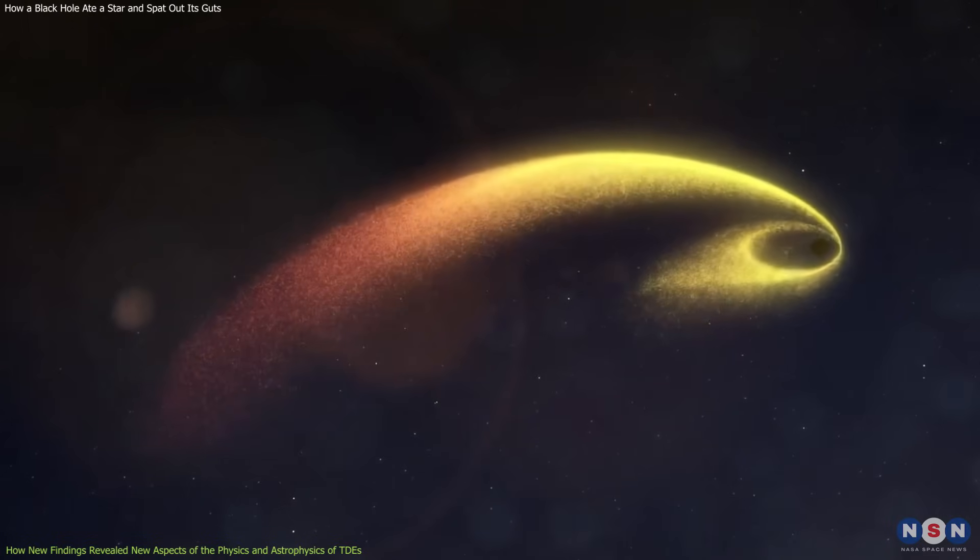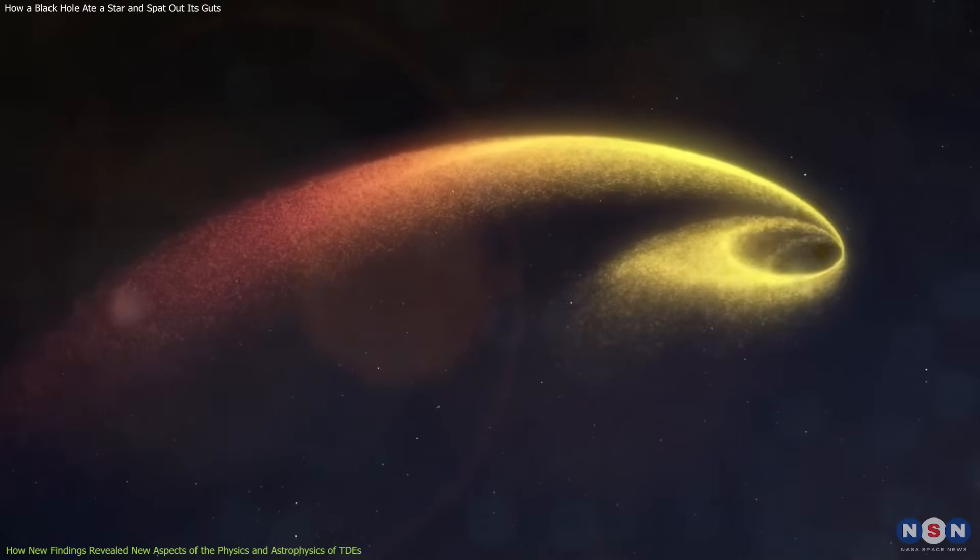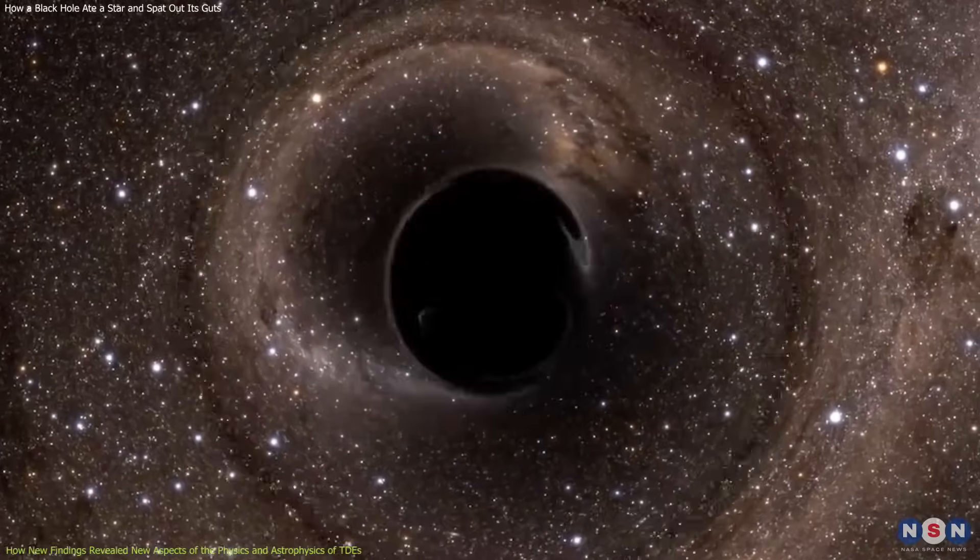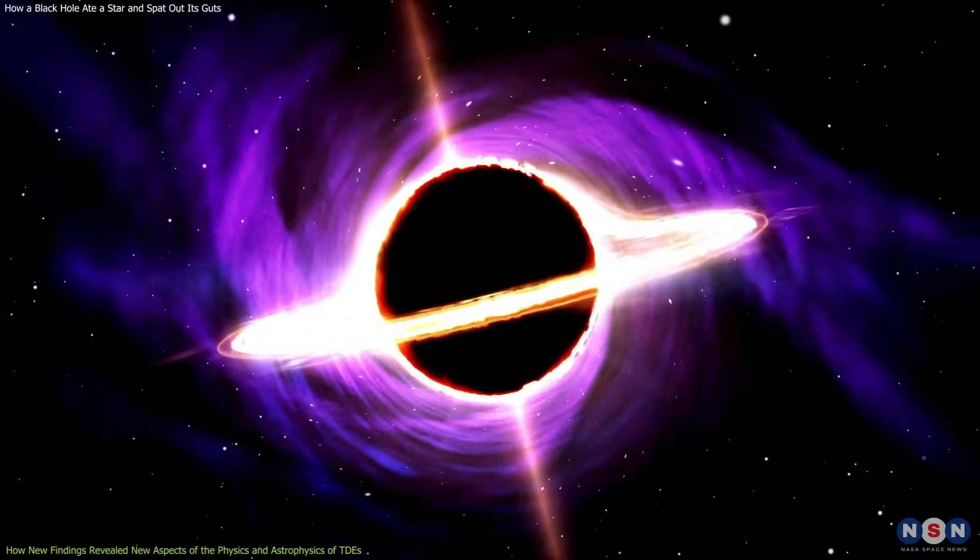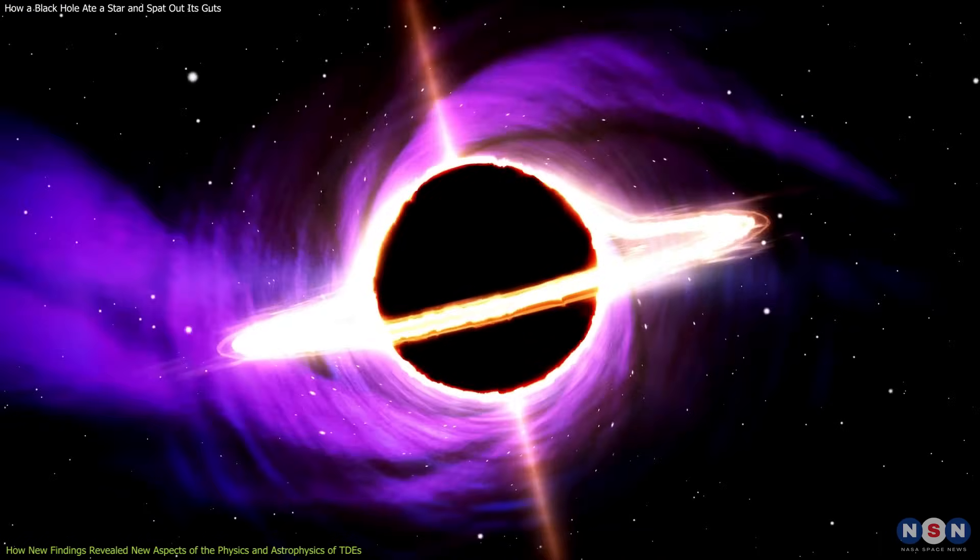The angular momentum of the objects that fall into a black hole, such as stars or other black holes, affects its spin. This means that by measuring the spin of a black hole, we can infer its history and origin.